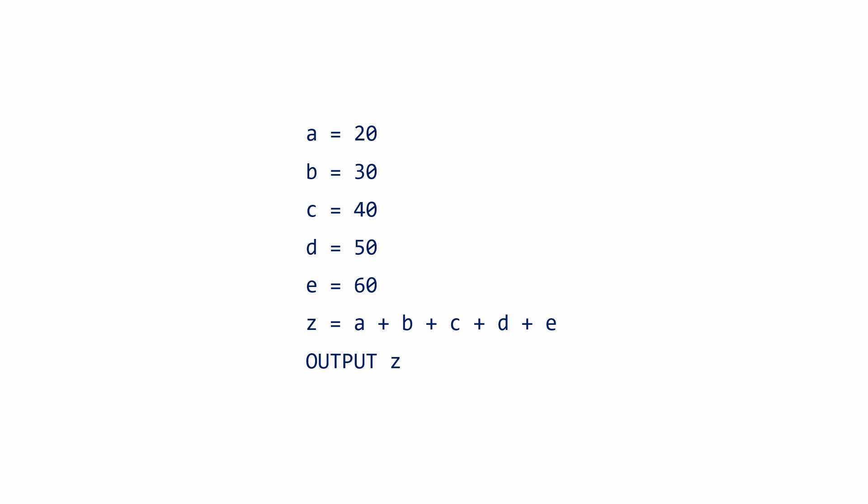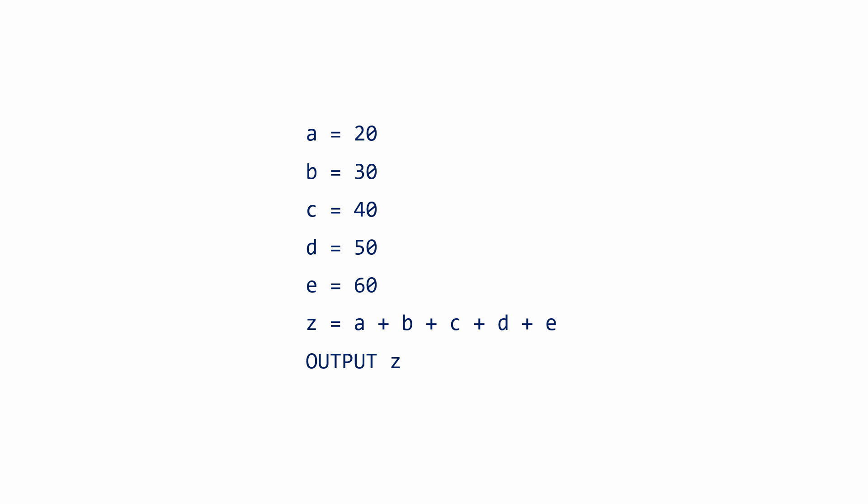It's not convenient for us humans to think in binary, so we can represent a register as a simple box containing a regular number or a single program instruction. Now, take a moment to look at this simple computer program written in a high-level programming language.